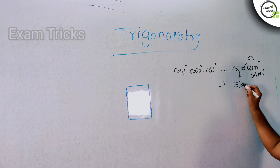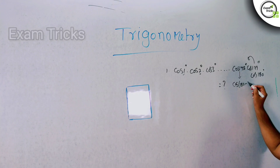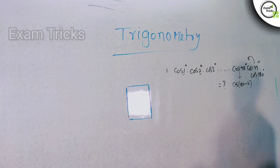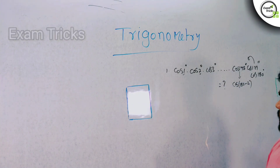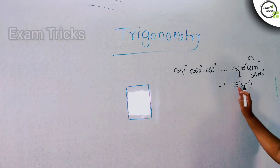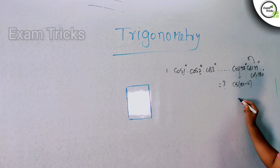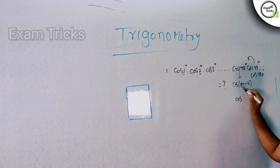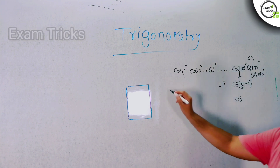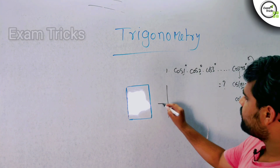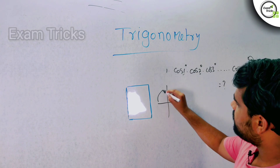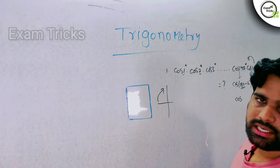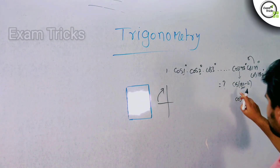So, cos(180 - x). Here we use the identity cos(180 - 2) and observe that this places us in the 2nd quadrant.